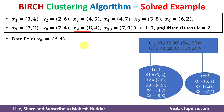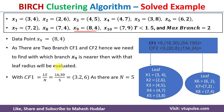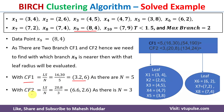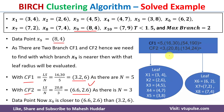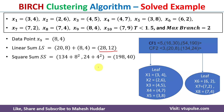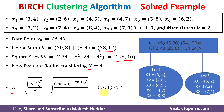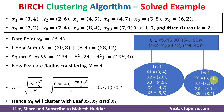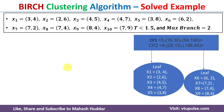For x9 = (8, 4): CF1 centroid = (3.2, 6), CF2 centroid = (6.62, 2.6). Since (8,4) is nearer to CF2, we update it. New LS = (20,8)+(8,4) = (28, 12), SS = (134,24)+(64,16) = (198, 40), N=4. Radius = (0.7, 1) — both less than 1.5, so x9 is added to CF2. CF2 now has N=4, LS=(28,12), SS=(198,40).